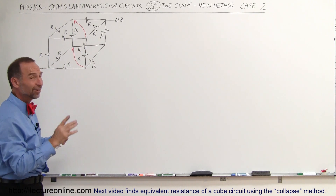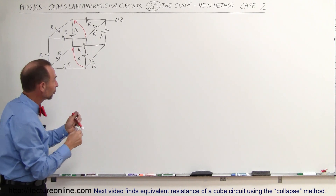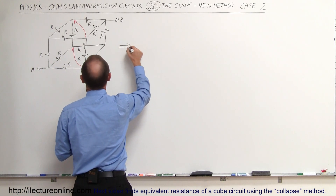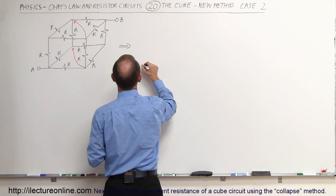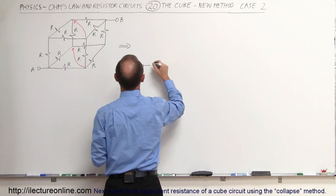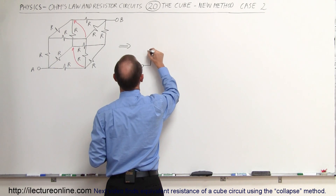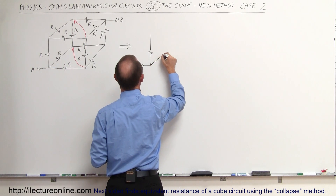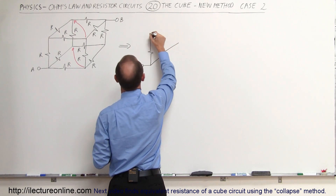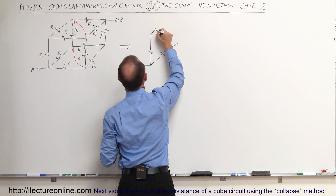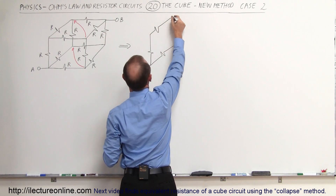So this circuit will turn into a circuit that looks like this. Here we still have point A. We collapse those together, so you end up with something that looks like that. These two collapse together, so that makes a resistor like that.